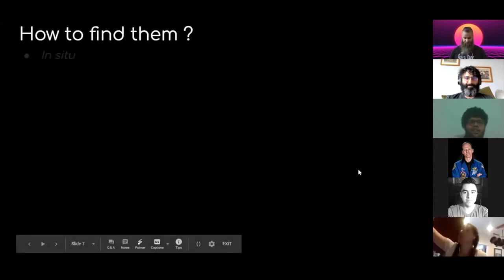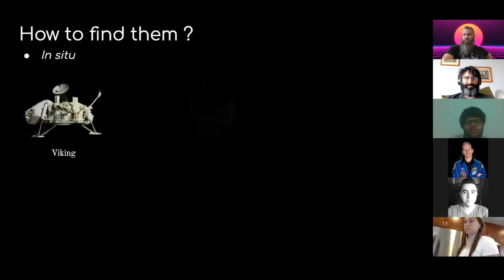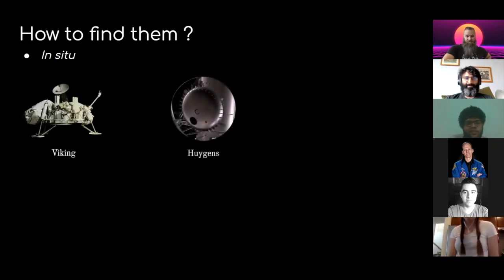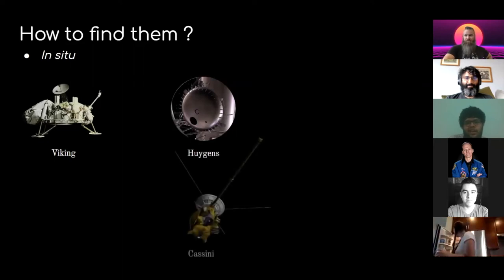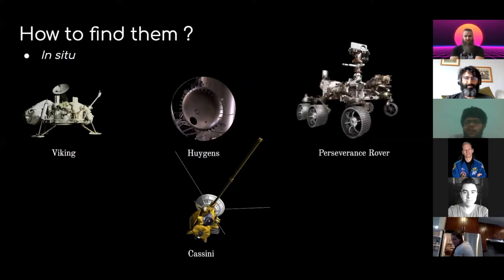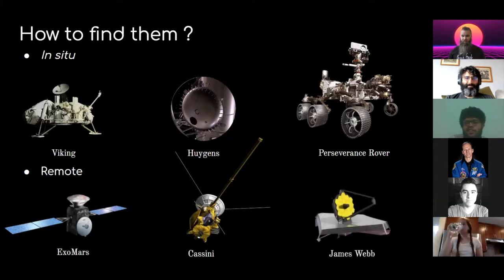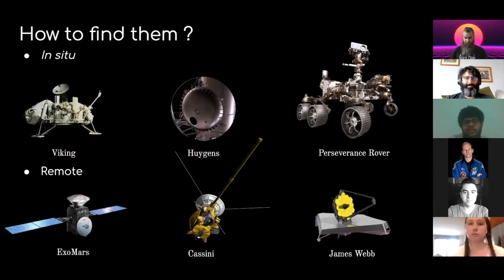How do we find them? In-situ biosignatures can be found using landers such as the Viking lander that landed on Mars, or the Huygens probe — a very interesting mission that went to Titan, a moon of Saturn — along with Cassini, which explored Saturn's system and also dived into a plume of Enceladus, another Saturn moon. And obviously the Perseverance rover, the most recent mission on its way to Mars. We also have remote methods: the ExoMars Orbiter has been orbiting Mars for four years, and the upcoming James Webb Space Telescope will look for exoplanets — planets that orbit stars other than our Sun.